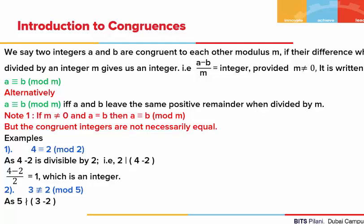Let us say we are given three integers a, b and m, where m is a non-zero integer. Then we say that the integers a and b are congruent to each other modulus m if the difference of a and b is divisible by m. By divisibility, we mean if a minus b upon m gives us an integer, we say a minus b is divisible by m. So we write it as: a is congruent to b mod m.